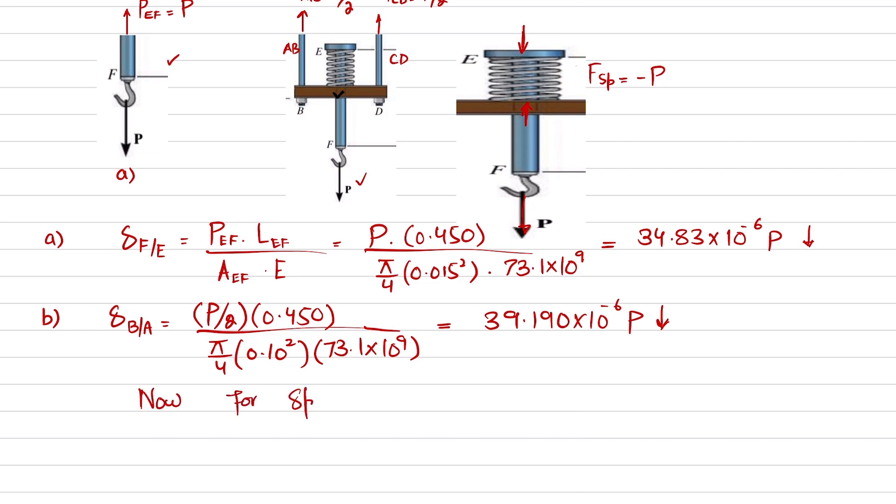Now for spring: because in spring, you can see point E moves downward towards point B. So change in point E with respect to B is equal to spring force divided by K, because we know that force of spring equals minus K times change.